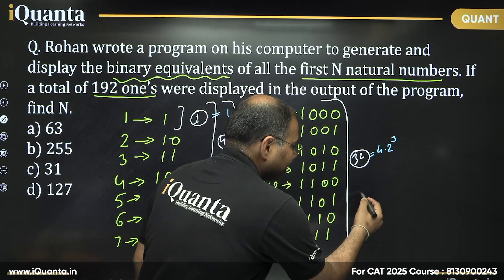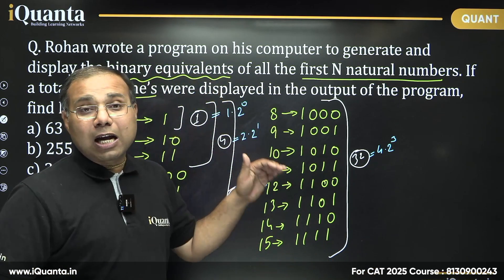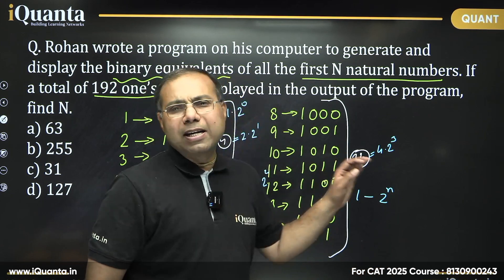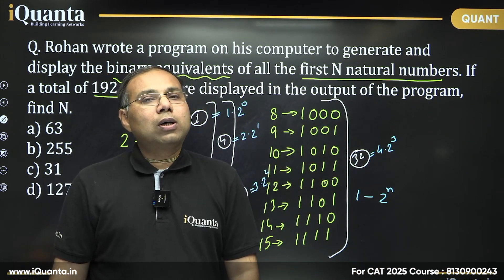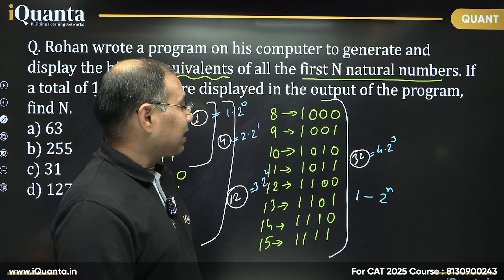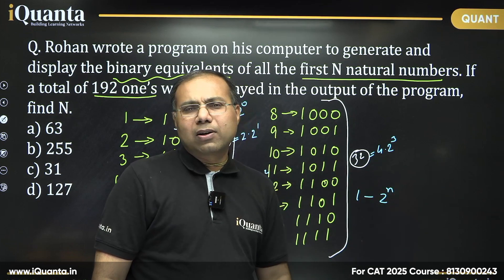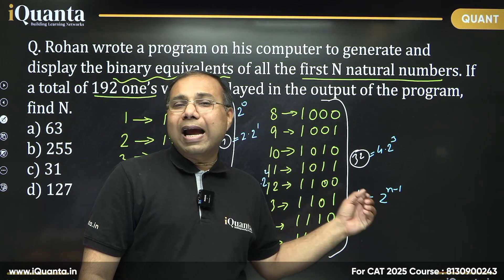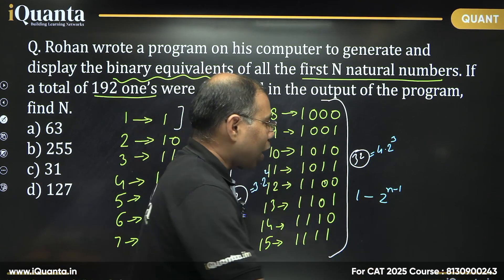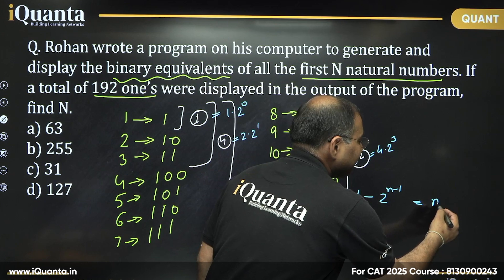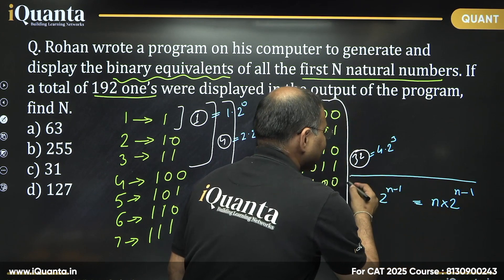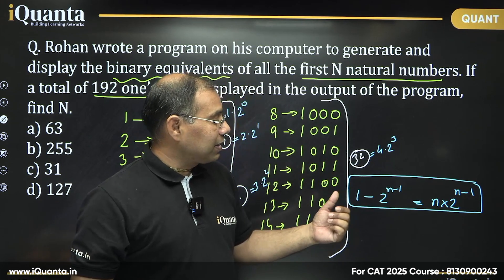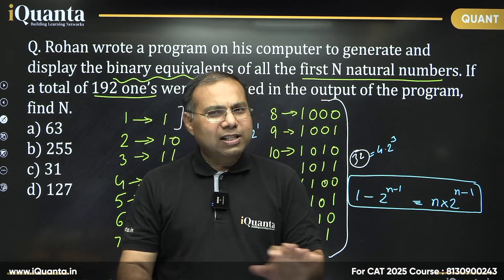That is the general pattern conclusion: if we write all natural numbers from 1 up to 2^n − 1 in binary — which is the largest n-digit binary number — then the total number of times digit 1 is used is n × 2^(n−1). That is the net conclusion.